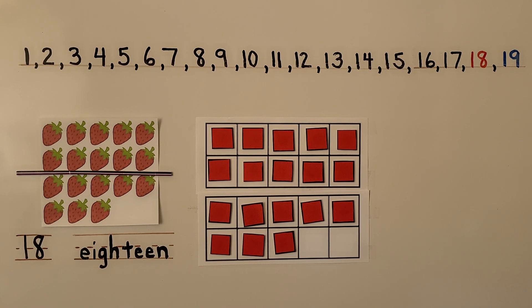We have to be very careful counting the counters so we know we have the correct amount. We don't want to put the wrong amount when we need to show 18.